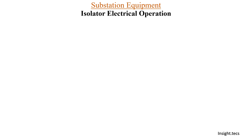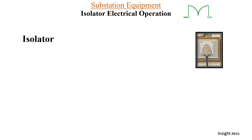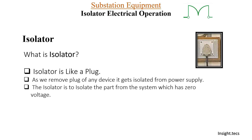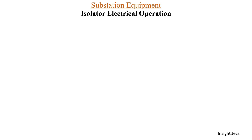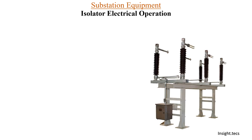So what is an isolator? The symbol of isolator is like this. An isolator is basically like a simple plug in our house — as we remove the plug of any device it gets isolated from the power supply. Similarly, isolators are used to isolate that part of the system which has zero voltage.